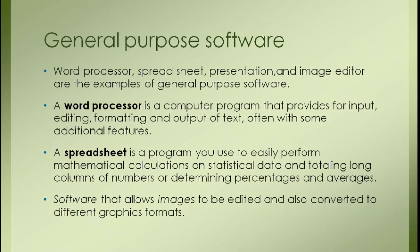General purpose software is made for everyone and is used in various fields. One software can be used by many. For example, Word Processor is a general purpose software that works on words — you write text, format it, edit it, delete it, and update it. Microsoft Word is a popular word processor, and it is a general purpose software. A student uses MS Word, a teacher uses it, a doctor, an engineer, a banker, an accountant — everyone uses it.